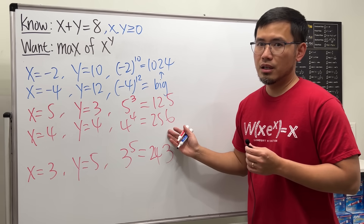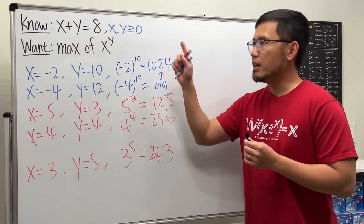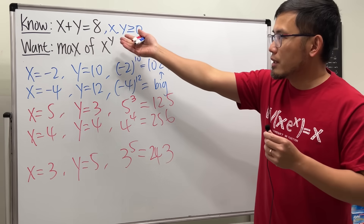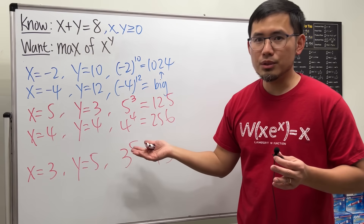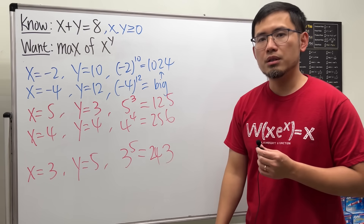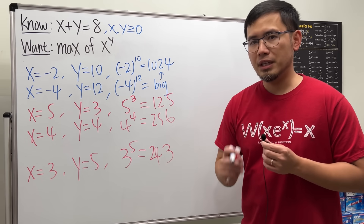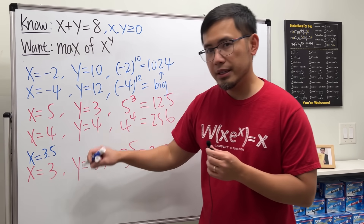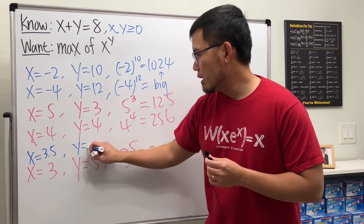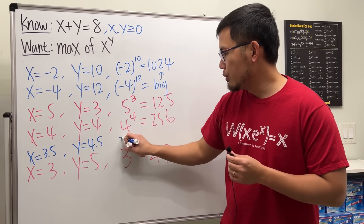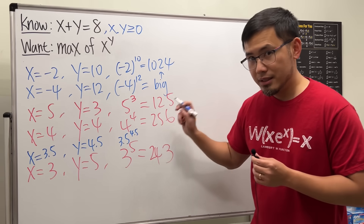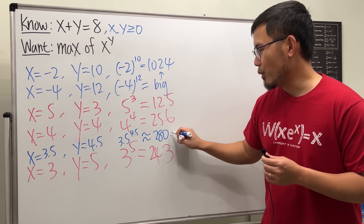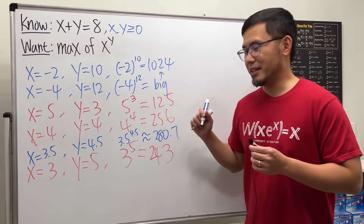I think 4 to the 4th, which is 256, is the biggest for whole numbers. However, the condition here is that there's no requirement for x and y to be whole numbers. What if we try some decimal numbers? If we put x to be 3.5, then y will be 4.5. And then 3.5 to the 4.5th power is approximately 280.7, which is bigger than that.